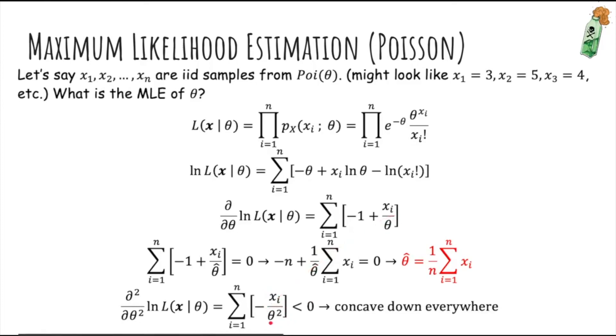And then we notice that because theta squared is always positive, the negative of that is always negative. So therefore the second derivative is always less than zero, so that means that it's concave down everywhere. And if it's concave down everywhere, that means that any place where the derivative is zero is a global maximum. So we've successfully found the global maximum.